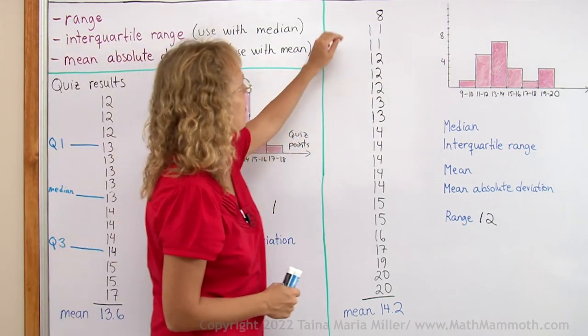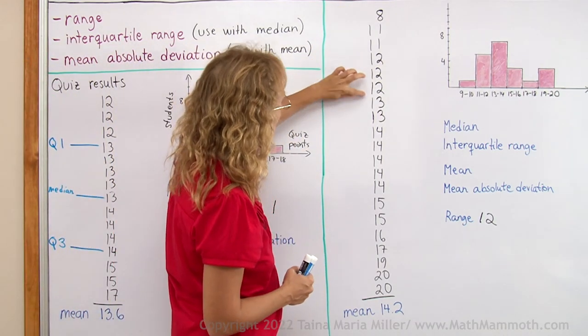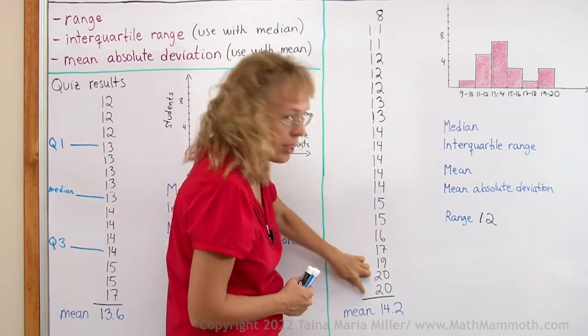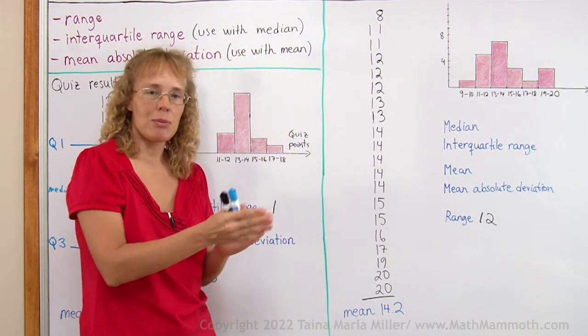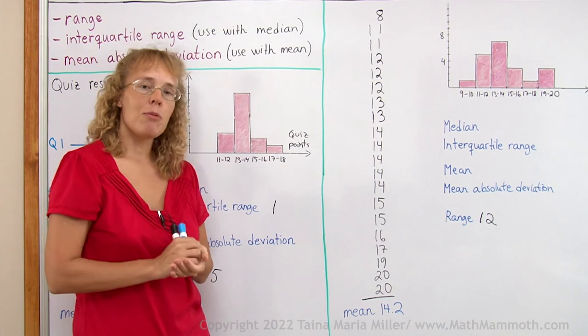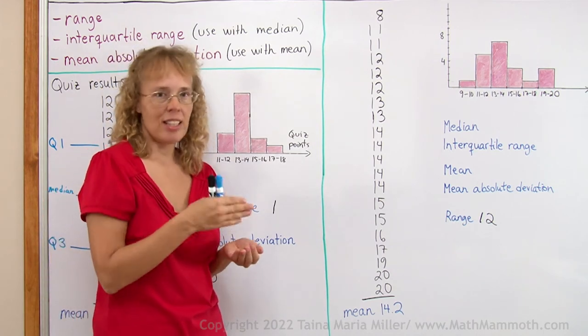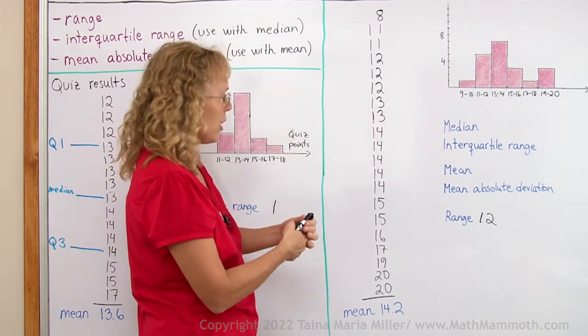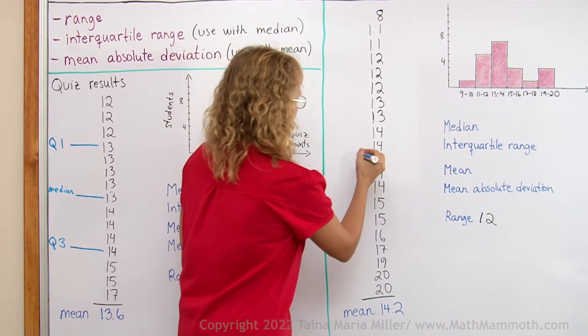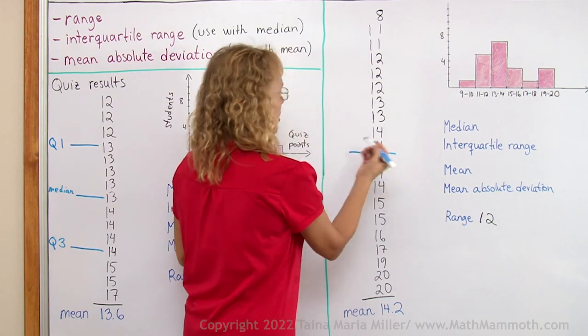Over here, we did the same. Let's count how many we have. 20 this time. So the median, half of the data items is 10 and 10. The median will be the average of the 10th and 11th item here. 10 and 11. Both are 14. The median is here. It is 14.